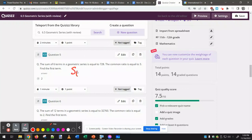Alright, so the sum of six terms is 728, the common ratio is 3, and we need to find the first term.